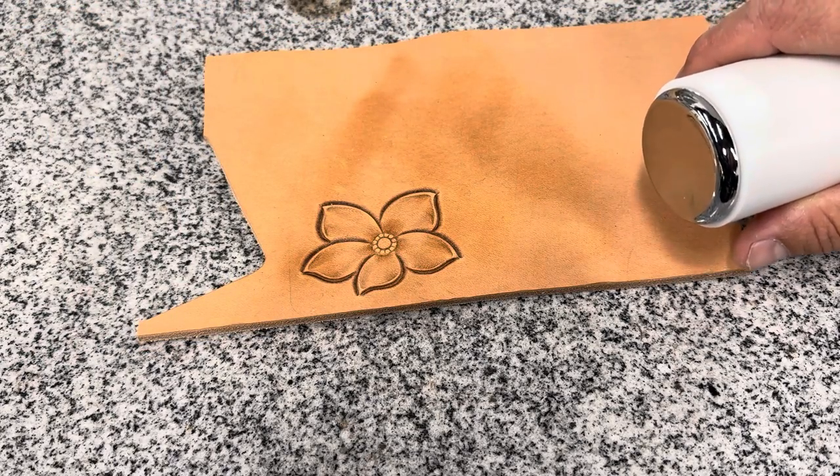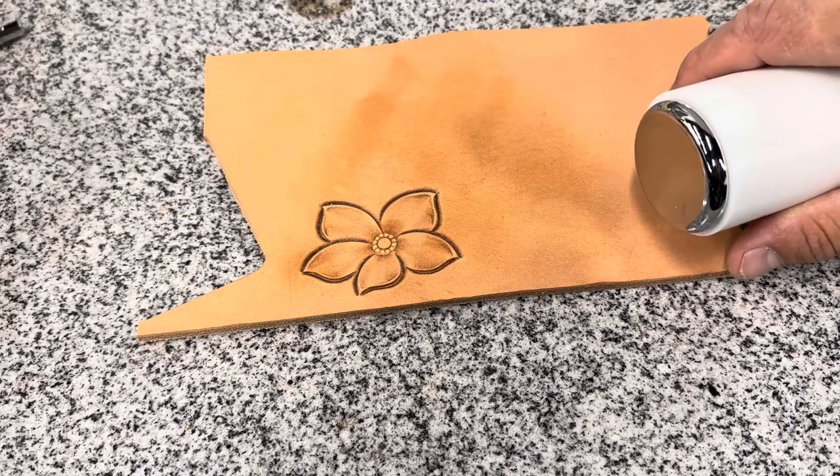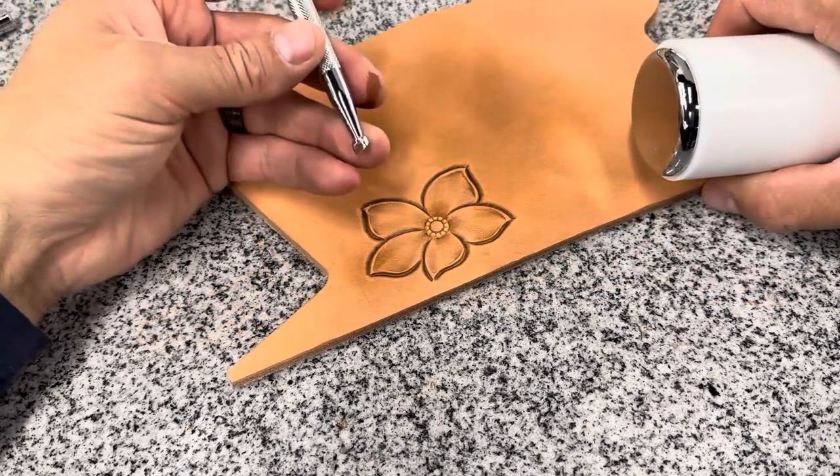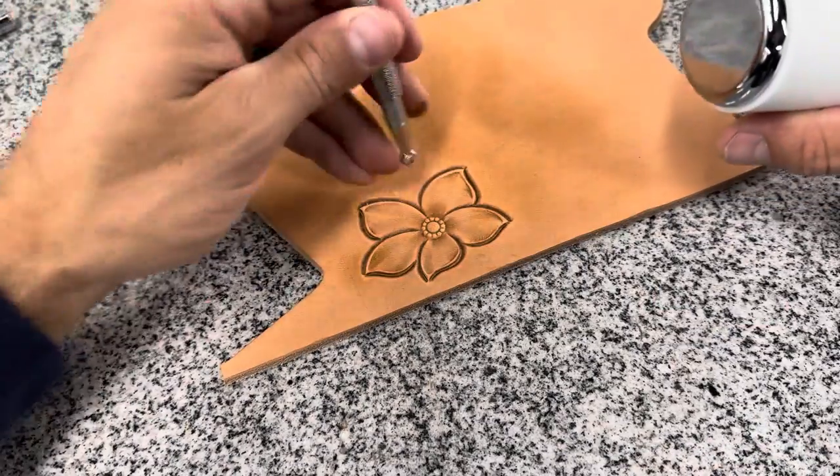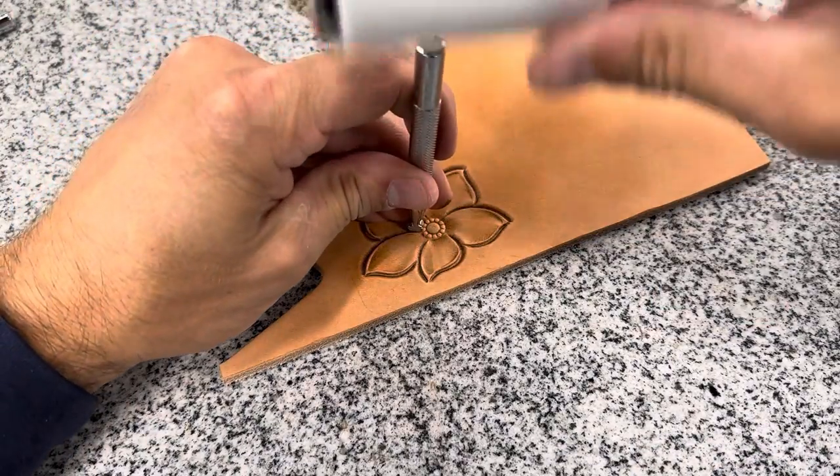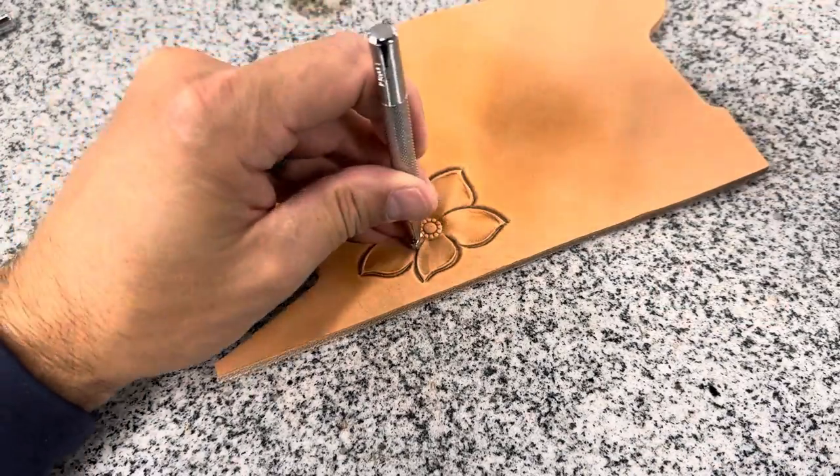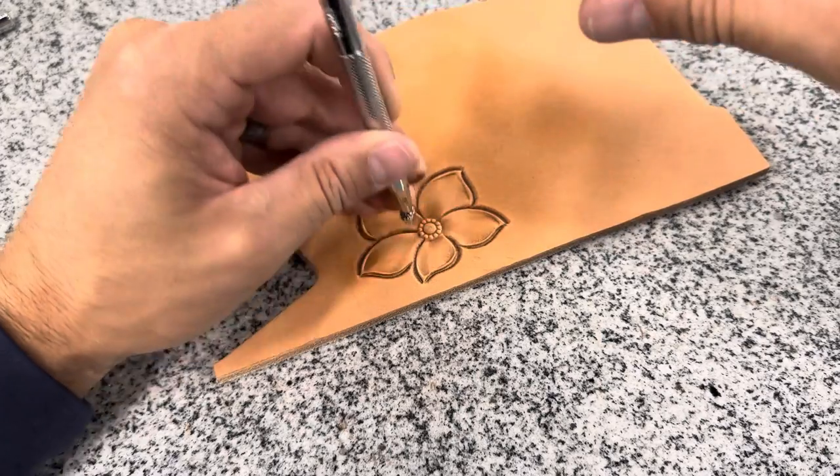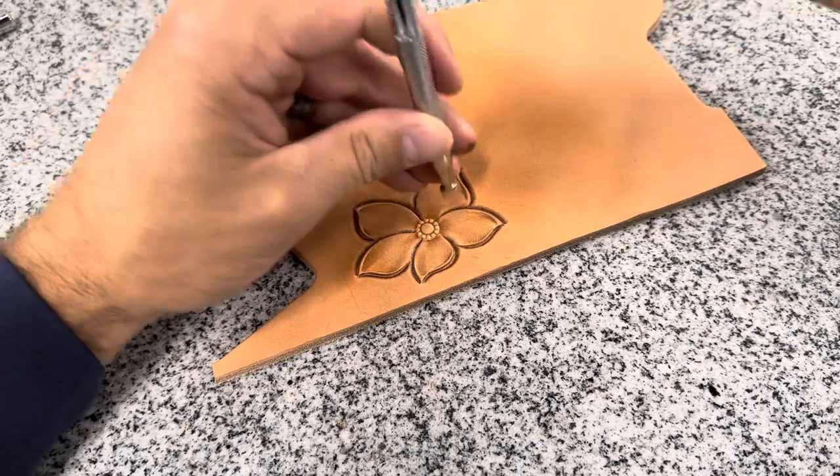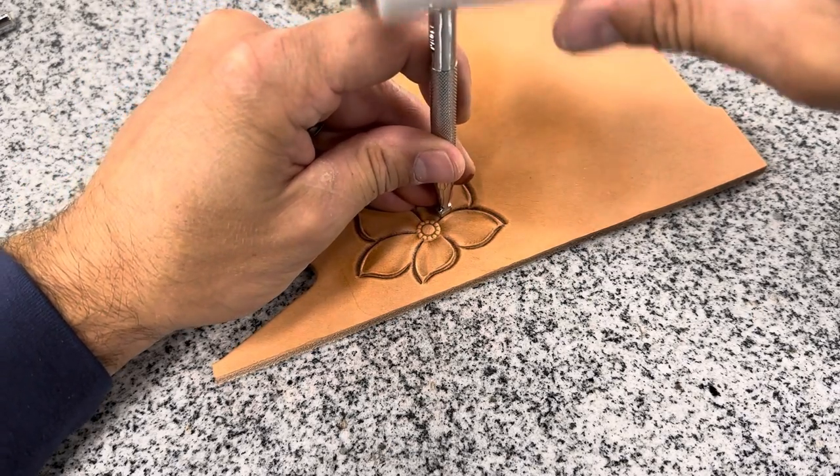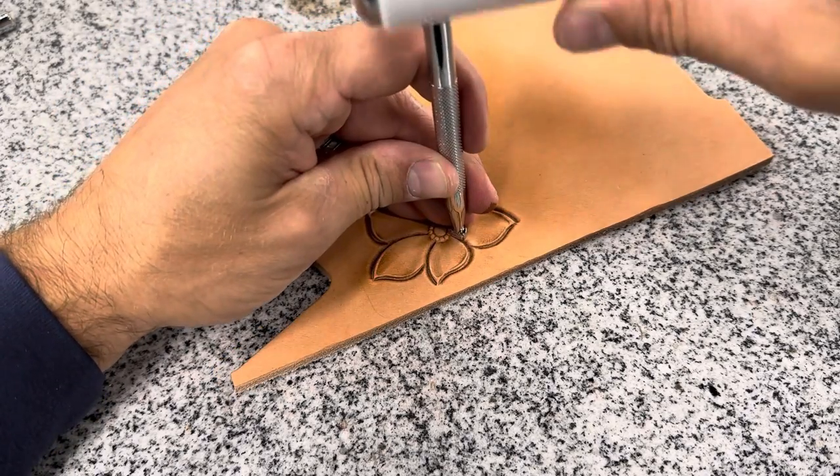We're going to go back and switch tools back here to my bevel again. This was that first one we used after our swivel knife cuts. I'm going to go back on these flower petals right down towards the center. Just kind of sharpen those up. Bring them right back into that flower center.